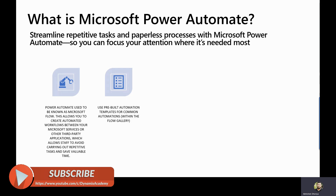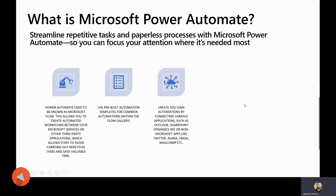You can use pre-built automation templates for common automations, and at the same time you can also create your own automations by connecting various applications such as Outlook, SharePoint, Dynamics 365, or non-Microsoft apps like Twitter, Asana, Gmail, Mailchimp, etc. You can connect to more than 300 different types of applications outside Microsoft using predefined out-of-the-box Microsoft Power Platform connectors to automate your repetitive tasks.